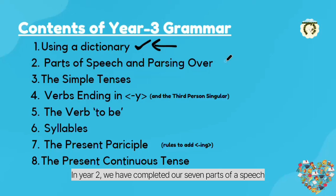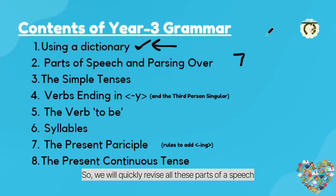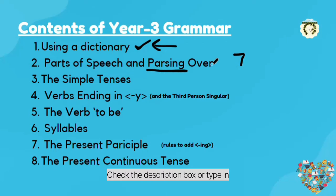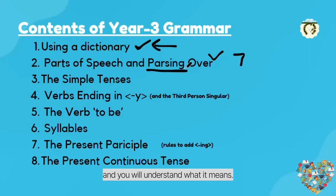In year 2, we completed our 7 parts of speech: nouns, pronouns, adjective, adverbs, verbs, conjunction and preposition. So we will have a quick revision of all these parts of speech through the exercise we call parsing over. If you want to learn about parsing over, check the description box or simply type in YouTube search 'parsing over homeschooling with Hira' and you will understand what it means.